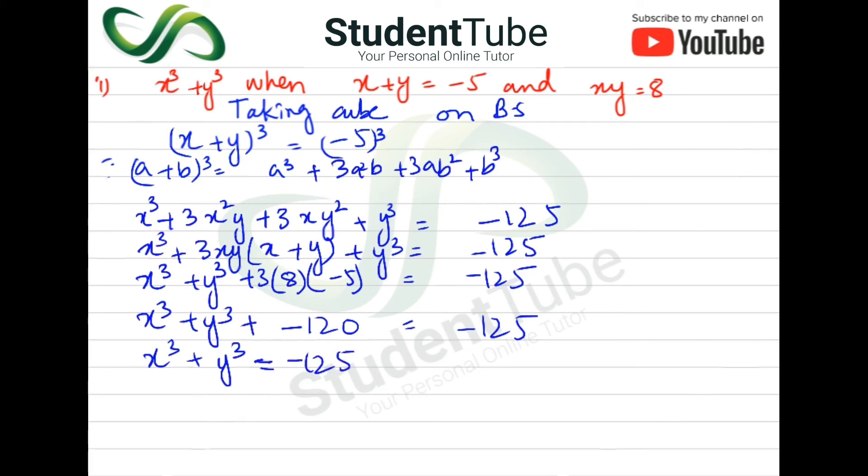So -120 = -125. Now x³ + y³ = -125, and -120 is going on the other side as +120. x³ + y³ = -125 + 120. Minus and plus equals minus because the bigger value has minus. So when 120 comes to 125, what will be left? -5 is the answer.